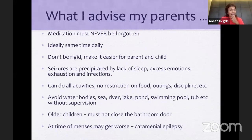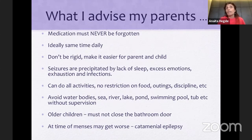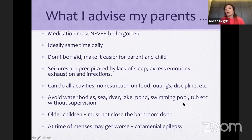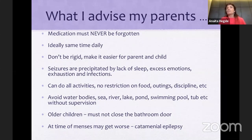When sending your child home, medication is a must — never to be forgotten. Ideally at the same time daily. Don't be rigid — make it easy for the parent and child, adjusted to their timetable — just before after breakfast, before school, and roughly 12 hours later. What precipitates seizures? Lack of sleep, excessive emotions, exhaustion, and infections — try to keep those in check. The child can do all activities — no restriction on food, outings, or discipline. The only thing to avoid is water bodies alone. If a teacher, parent, or friend is with them, they can do everything including swimming. For older children, do not let them lock the bathroom door — if they have a seizure they could fall and the door must be opened. At time of menses, seizures might get worse — catamenial epilepsy — and medicines can help.